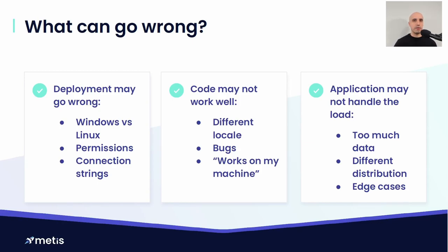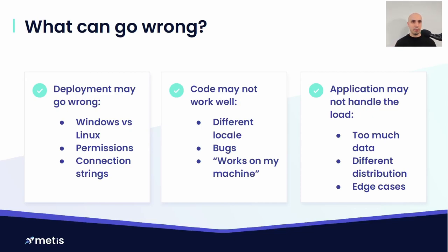Another thing that may cause issues is different application load. In a local environment we typically just test happy paths, but in production we deal with peak times, different activity in the morning, evening, night, over weekends or work days, different traffic distribution depending on country or continent, and completely different data. Various things may break strictly related to how we deal with databases — whether we perform efficient queries, whether they can be scaled out.